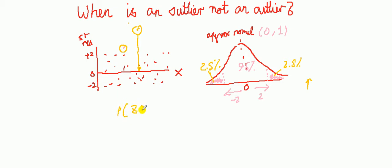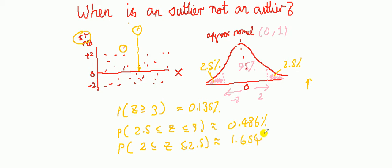So, here's something I looked up earlier. The probability that the standardized residual takes value greater than 3 is about 0.135%, extremely small. The chance that it should fall between the interval 2.5 and 3 is approximately 0.486%. And the chance that it falls between 2 and 2.5, comes out to be 1.654%.